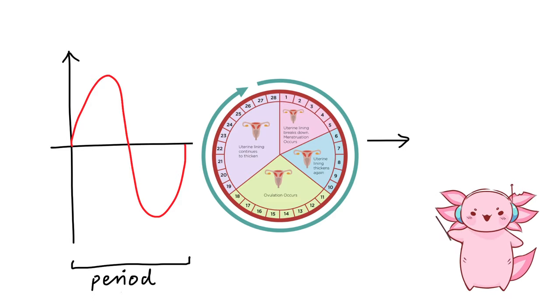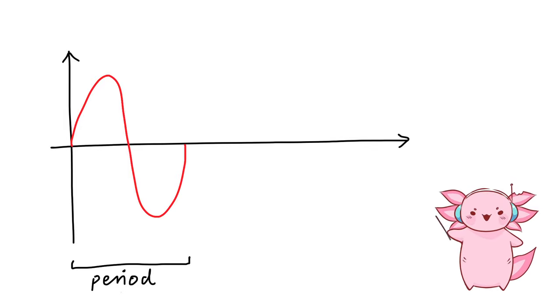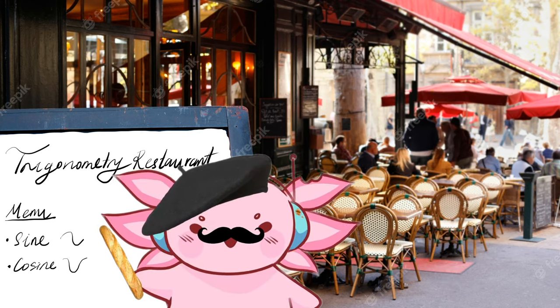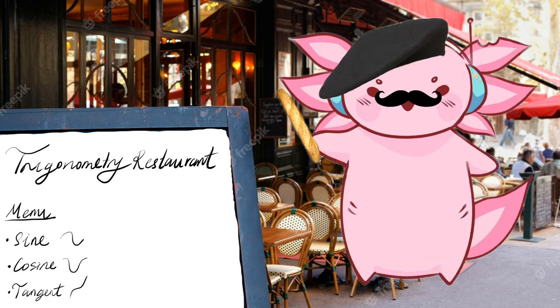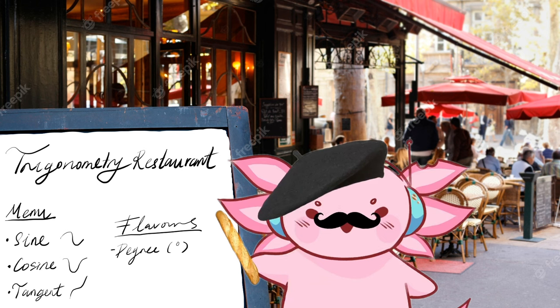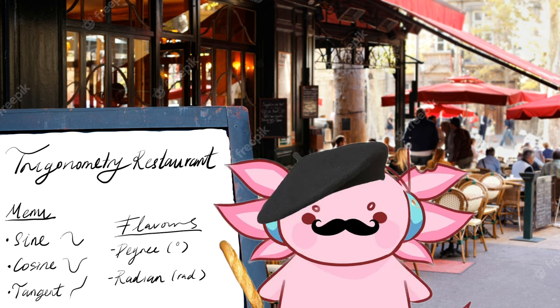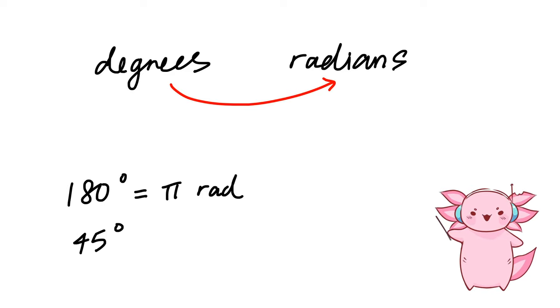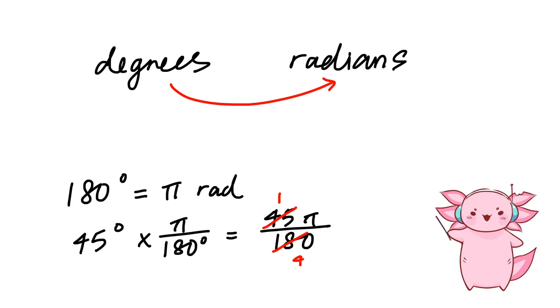Welcome to the trigonometry restaurant. On the menu we have sine, cosine, and tangent, which come in two flavors: degrees and radians. Remember that 180 degrees equals π radians. To convert 45 degrees to radians, take 45 × π/180, which becomes π/4. Sine and cosine graphs are very similar, following the equation a·sin(bx) + c or a·cos(bx) + c.